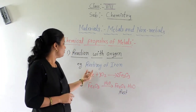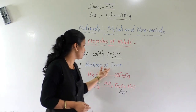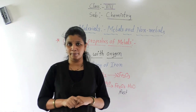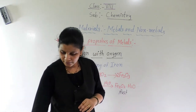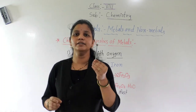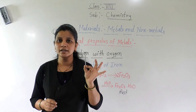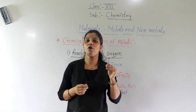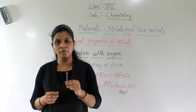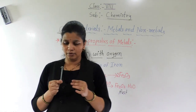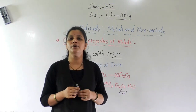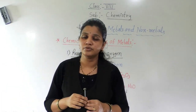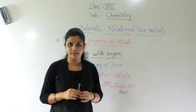Today we discuss about the next example, that is rusting of iron. Iron is a metal. When iron comes into contact with oxygen and water, it is rusted. It takes more time. See, the grill in our windows — after some time it also gets rusted.